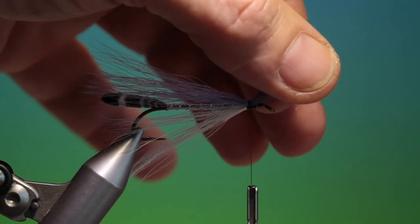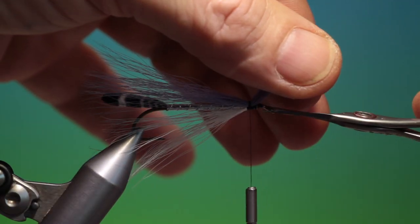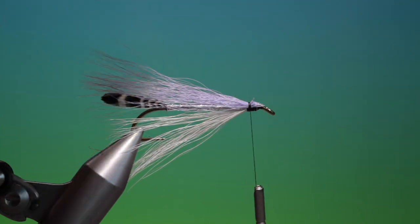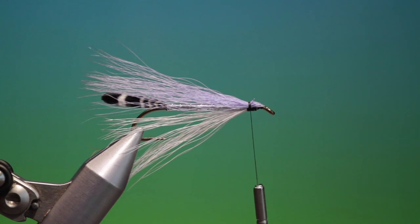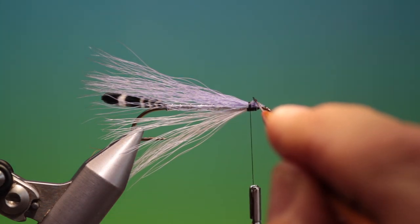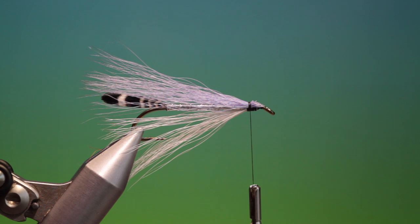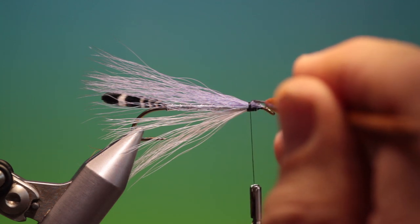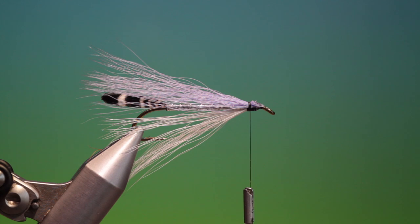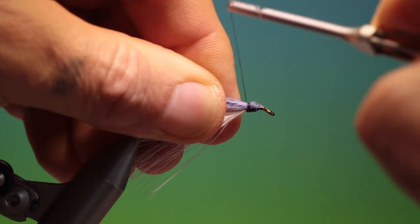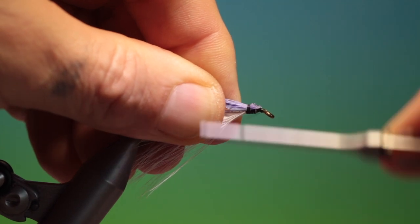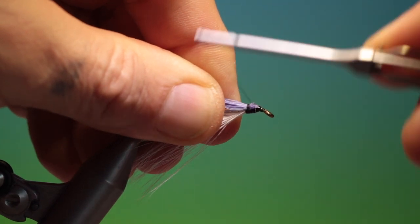And then I can lift everything up there, trim it off at an angle. That'll do us just fine. And then another drop of head cement on there. I only do this with fishing flies. It just makes them a little more robust. And then I can go to the front again and just work my way back a wee ways.